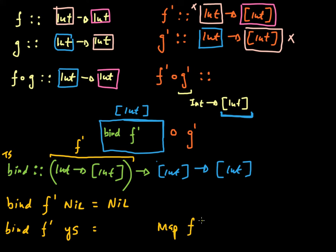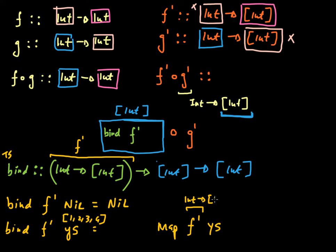What map does is: it takes in f prime and takes in ys, and I'm going to take each one of these elements out from ys. As an example, if ys contains 1, 2, 3, 4, I'm going to take 1 out, then 2, then 3, then 4, and as I take each one of them out I'm going to feed it into f prime. And f prime takes in that integer extracted from ys and gives back another list of integers. So this map takes in an integer and gives back a list of integers, and ys happens to be a list of integers.